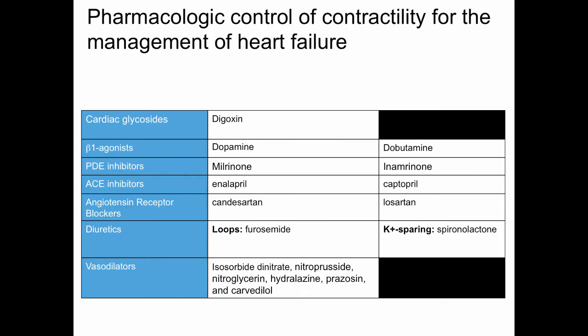The drugs used to control contractility and manage heart failure come from many different classes: cardiac glycosides including digoxin; beta-1 receptor agonists including dopamine and dobutamine; phosphodiesterase inhibitors including milrinone and enamrinone; ACE inhibitors including enalapril and captopril; angiotensin receptor blockers including candesartan and losartan; diuretics such as the loop diuretics like furosemide or potassium-sparing diuretics such as spironolactone; and vasodilators including isosorbide dinitrate, nitroprusside, nitroglycerin, hydralazine, prazosin, and carvedilol. We'll discuss ACE inhibitors, ARBs, diuretics, and vasodilators in more depth in later sessions.